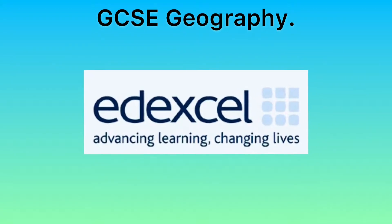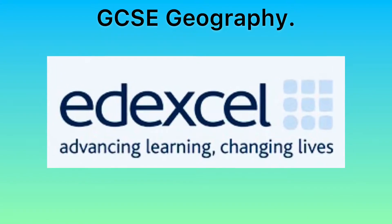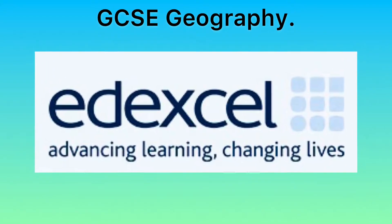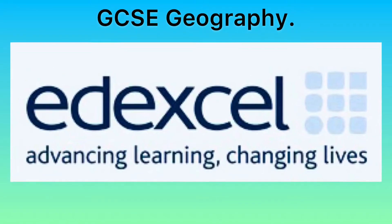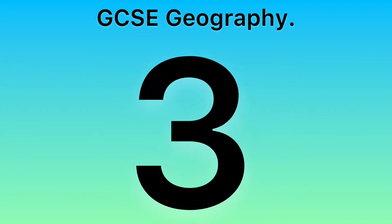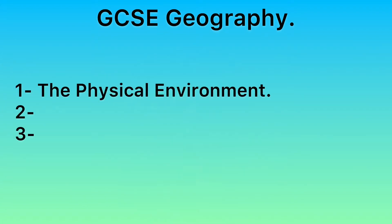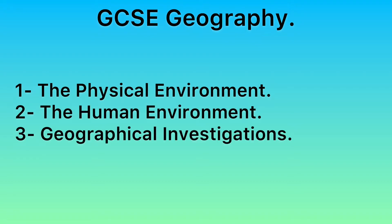We will be following the Edexcel A GCSE course, so let's find out how it's set up and what you'll be learning. The Edexcel A course is split into three main sections: the physical environment, which is paper one; the human environment, which is paper two; and geographical investigations, which is paper three.